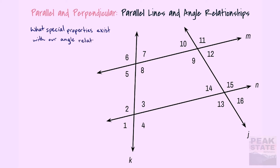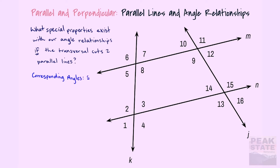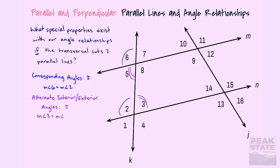What special properties exist with our angle relationships if and only if the transversal is cutting through two parallel lines? We know that corresponding angles are congruent. An example would be angle six and angle two — if lines m and n are parallel, then transversal k cuts through and we know angles two and six are congruent.